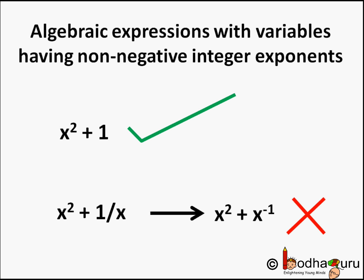So x squared plus 1 — it is a polynomial because the variable x has an exponent of plus 2, which is a non-negative integer exponent.